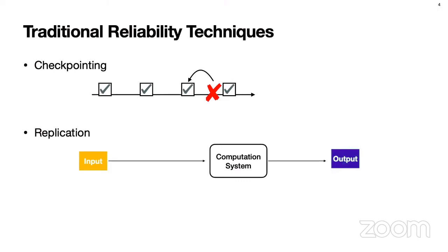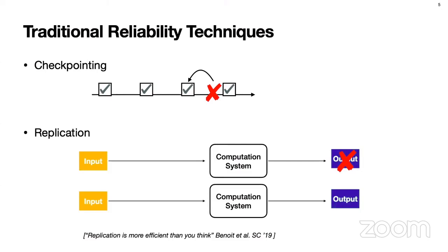Another way of building reliability is replication. Instead of having one computation system, you can build a replica of it that performs exactly the same computation, so that even if you lose your output from the first one, you can still recover the computation output using the replica. This seems very inefficient because you need at least 2x redundancy. But a recent paper at SC 2019 showed that replication is more efficient than you think, and in fact they claim we might have to use some sort of replication in conjunction with checkpointing in upcoming exascale systems.